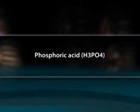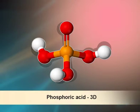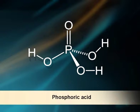Regarding phosphoric acid (H₃PO₄): phosphoric acid has three monovalent hydroxyl groups and a divalent oxygen atom, all linked to the pentavalent phosphorus atom.